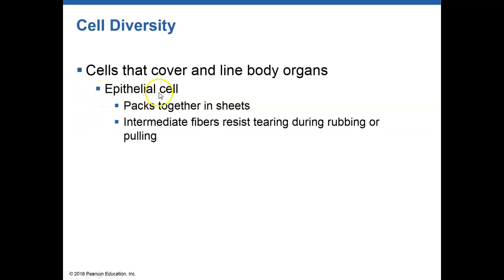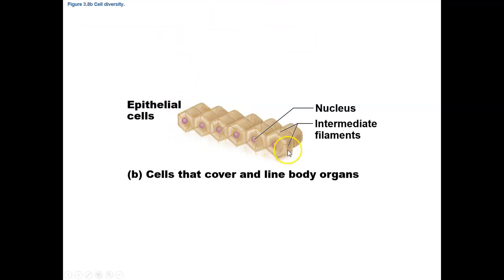We have cells that line our body — covering or lining cells — called epithelial cells. These are very tightly packed cells containing multiple desmosomes, with hemidesmosomes holding them to the underlying connective tissue. They contain gap junctions for communication and are typically arranged as sheets of cells with very minimal extracellular material. Here's what your epithelial cells look like — just packed, very tightly connected.